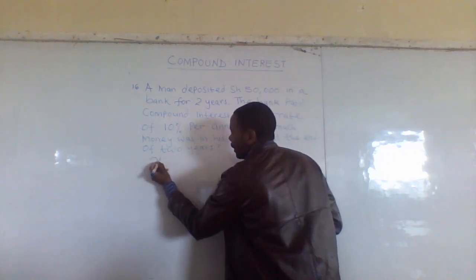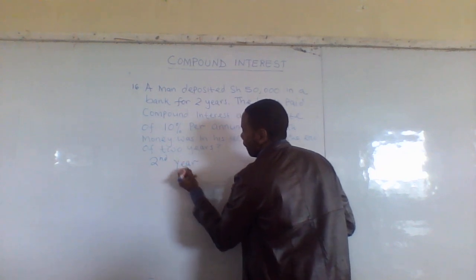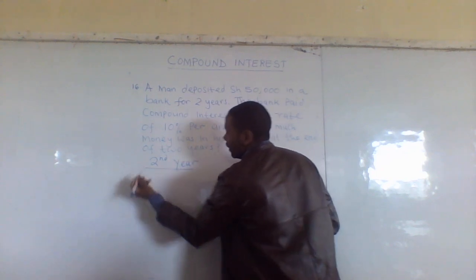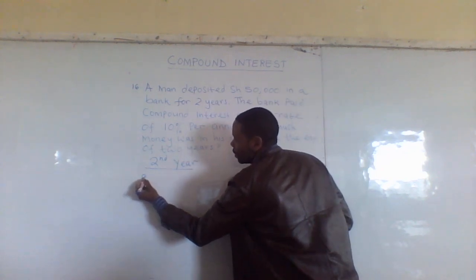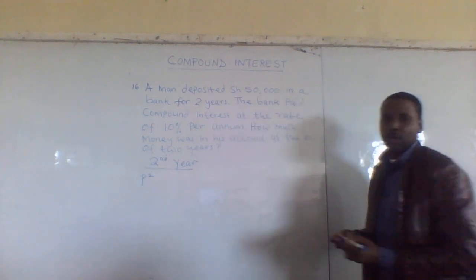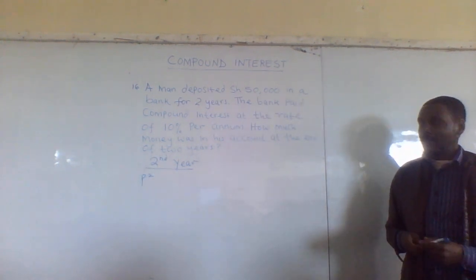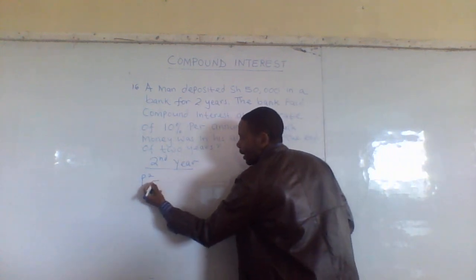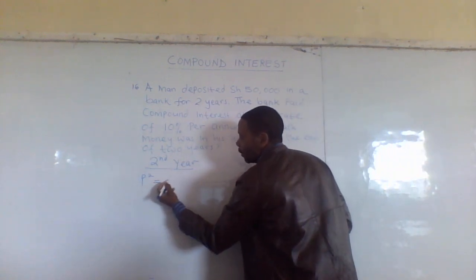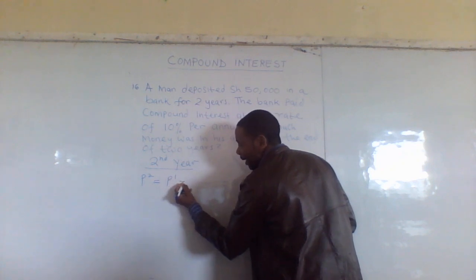We now come to the second year. For the second year we are going to start with something called Principal 2. Who can tell me what Principal 2 will mean? It is the principal for the second year, and it is made up of the first principal plus the first interest we got.